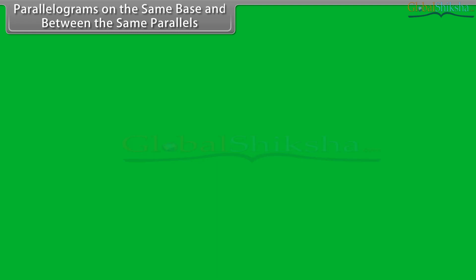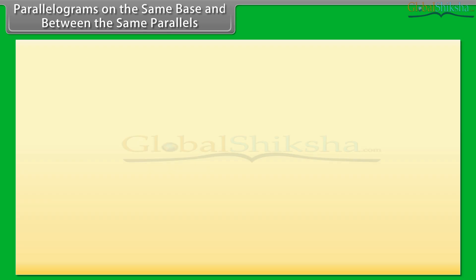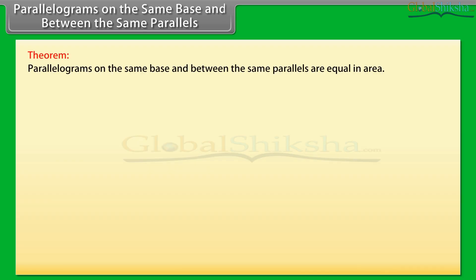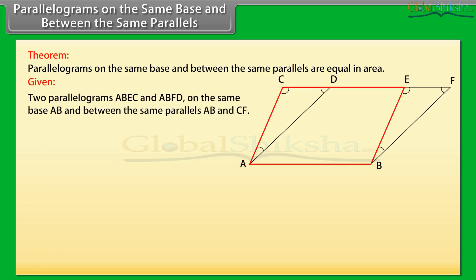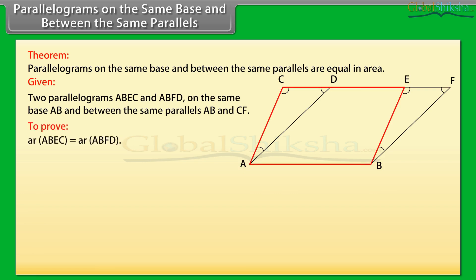Parallelograms on the same base and between the same parallels. Theorem: Parallelograms on the same base and between the same parallels are equal in area. Let us prove this theorem. Two parallelograms ABEC and ABFD on the same base AB and between the same parallels AB and CF are given. We need to prove that area of ABEC equals area of ABFD.